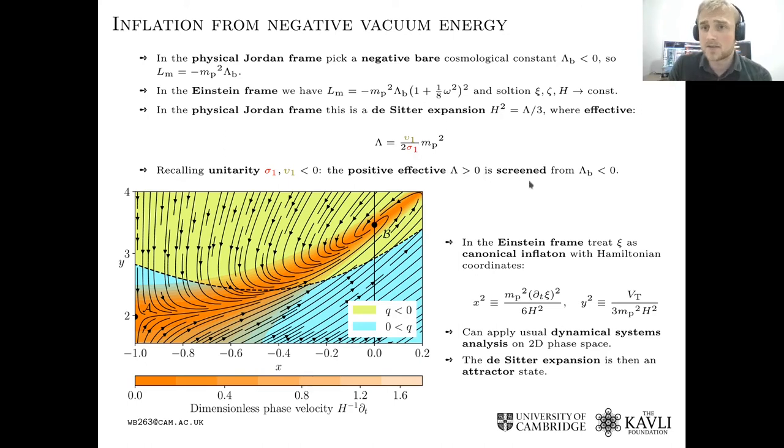So this is quite odd, but we can confirm that it holds. So we can do a dynamical systems analysis on the theory in the Einstein frame. So this is the two-dimensional phase space of the canonical scalar field z. This attractor state here corresponds to the de Sitter expansion in exactly the position we would expect to find it.